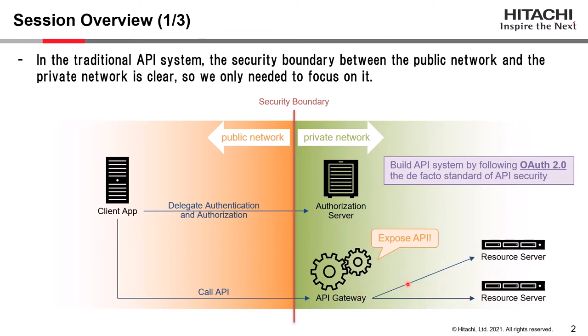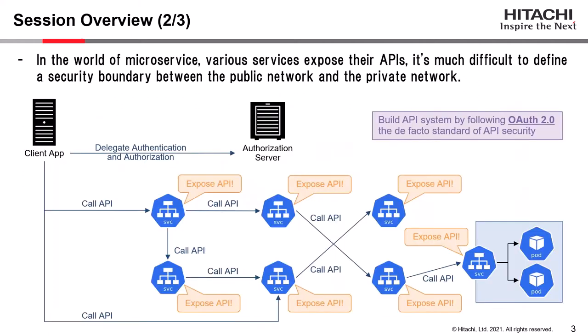These internal communications are recognized as safe, so they are typically not encrypted. Previously, the components that expose APIs are limited, so building a security boundary is quite easy. In the world of microservices, on the other hand, various services expose their APIs, so it's much more difficult to define a security boundary between the public network and the private network.